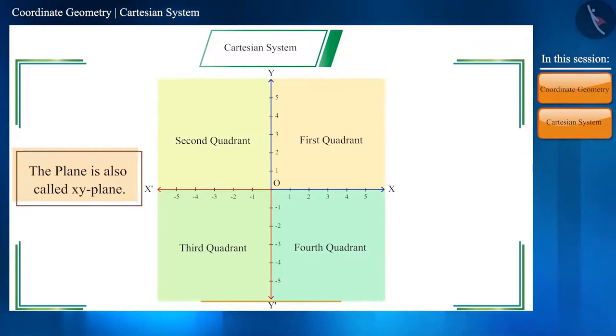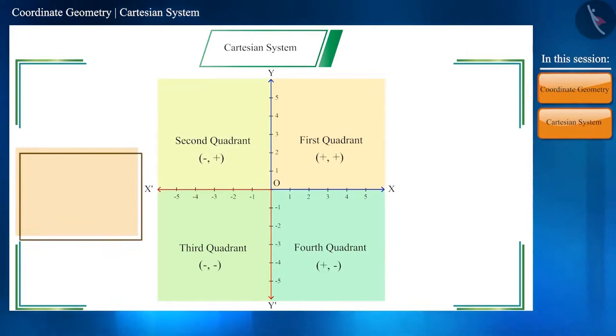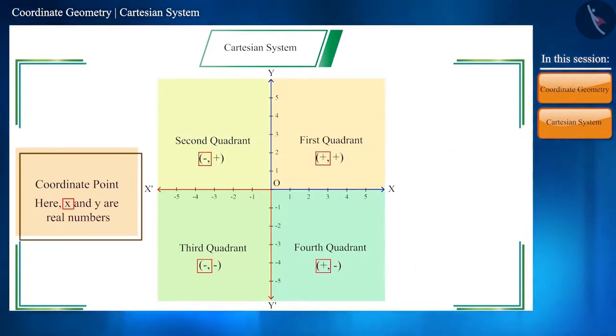The point in these planes are represented in this manner, which is called the coordinate point. The first number in this coordinate point represents the point on the X-axis and the second number represents the point on the Y-axis.